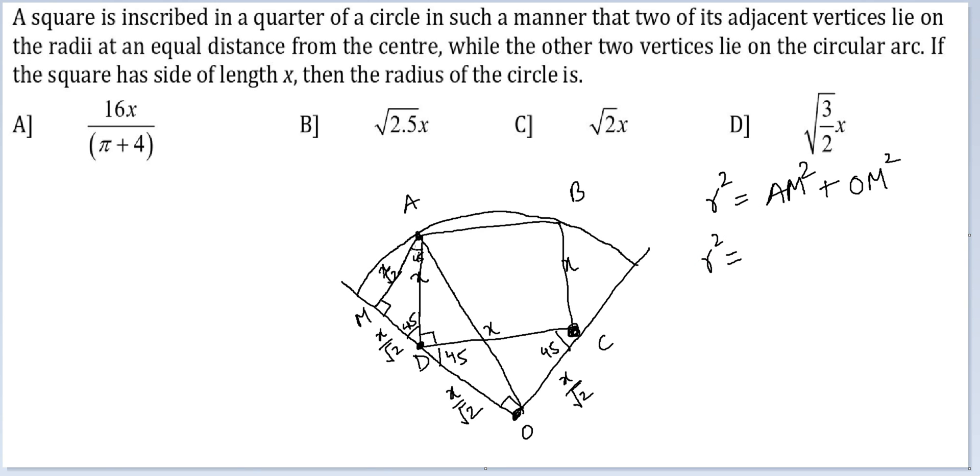So, R squared is equal to... AM squared is how much? X squared by 2. So, root 2x... so 2x... sorry, root 2x, so 2x squared. Right. So, R squared is equal to 2.5x squared. Or, R should be equal to root 2.5 times x, which is given in option B. So, that should be the answer.